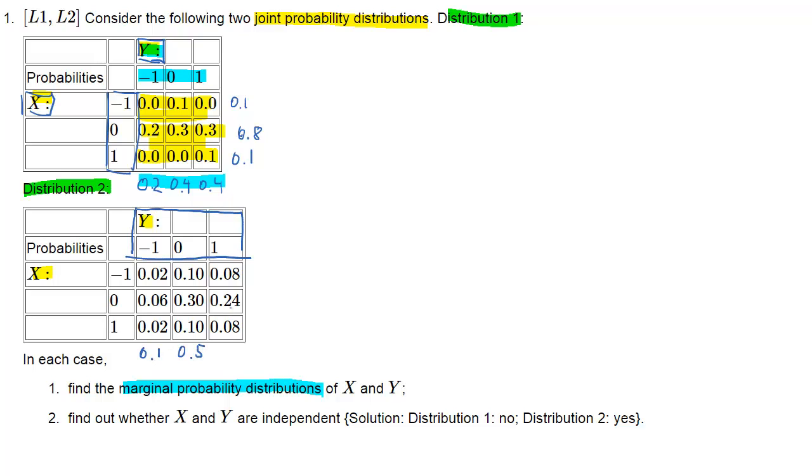Then we do the same for the second joint distribution. We will obtain one marginal distribution for Y and one for X. So what we can say here is that the probability, for instance, of X being equal to 1 is 0.2 given that second joint distribution.